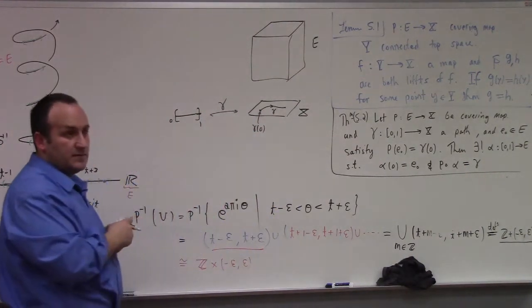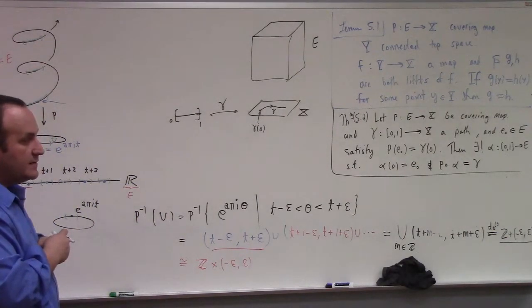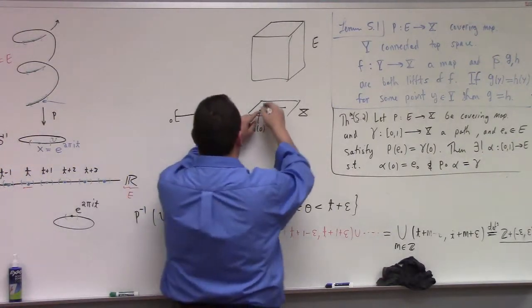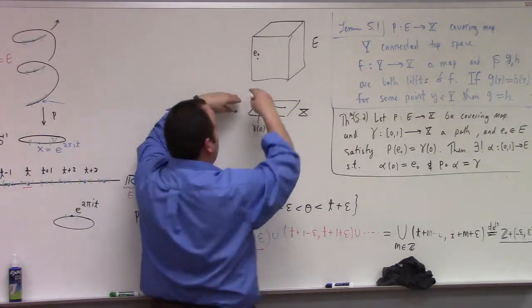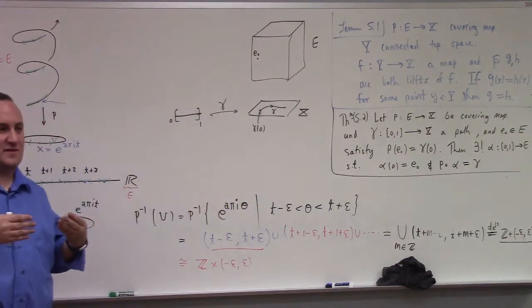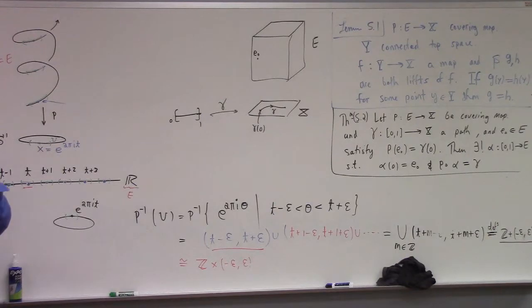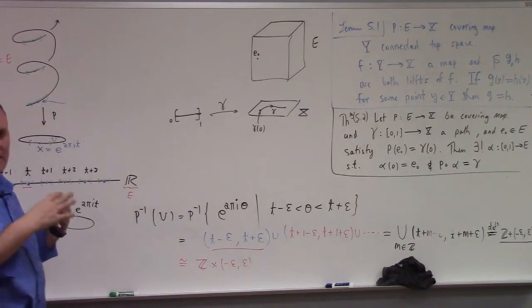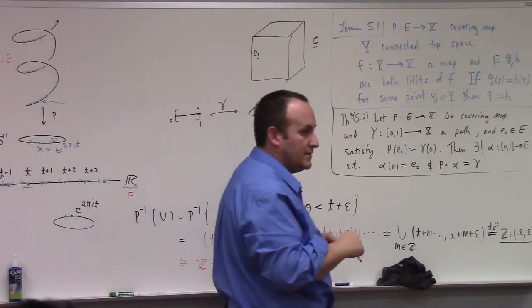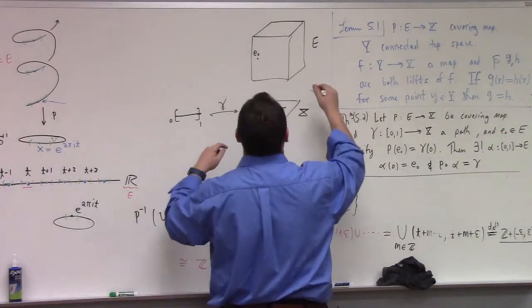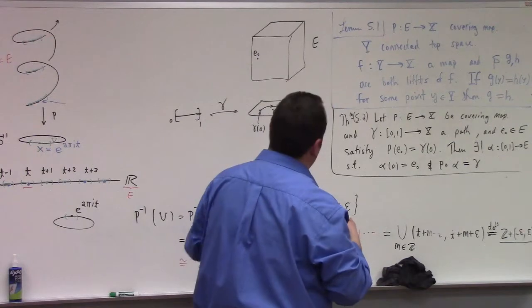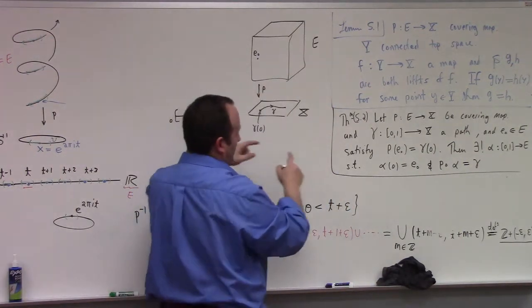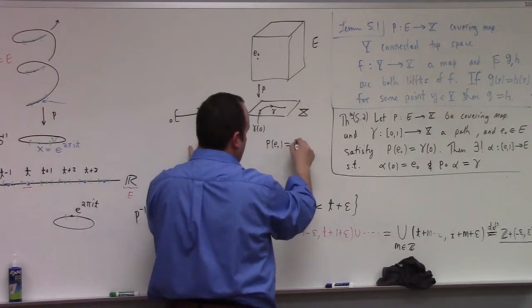Over here 0, 1. So this is my γ. This right here is γ(0), whatever that point is. What else - e₀ is a point in E, so I would picture e₀ like over here, because I picture the fibers over the base space as kind of being... My picture doesn't do justice - it doesn't capture the disjointness.